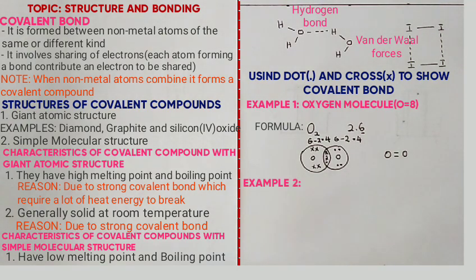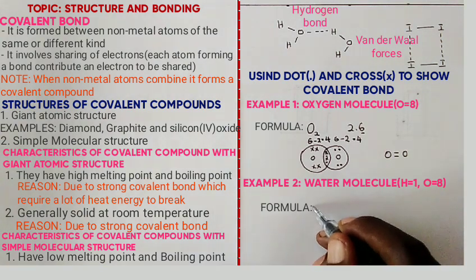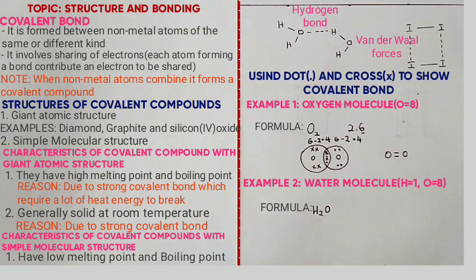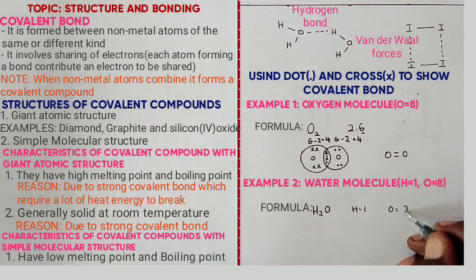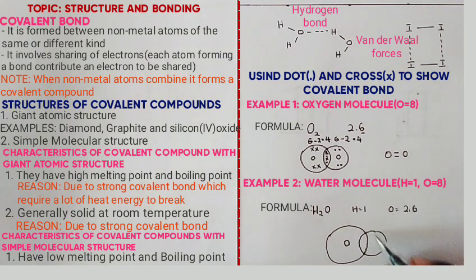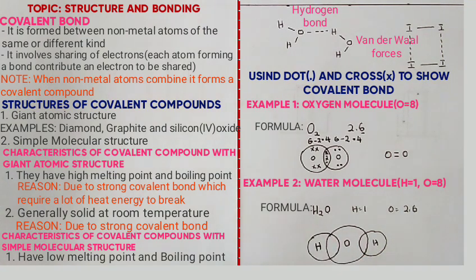Example number two is the water molecule, H₂O. Because the formula has one oxygen and two hydrogen atoms, place oxygen at the center, then one hydrogen on one side and another hydrogen on the other side. Place the one electron for each hydrogen. Then place the six electrons of oxygen.